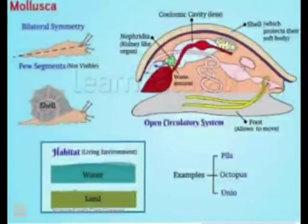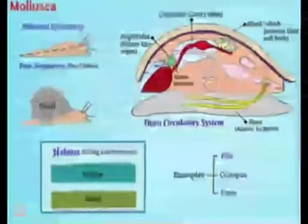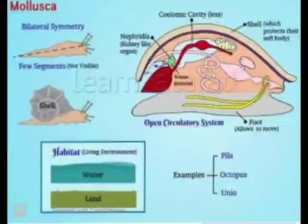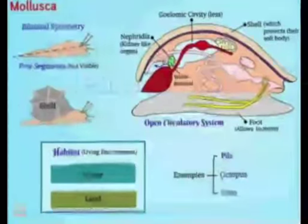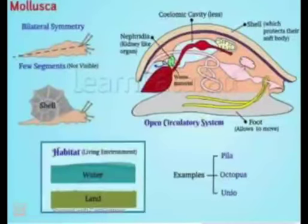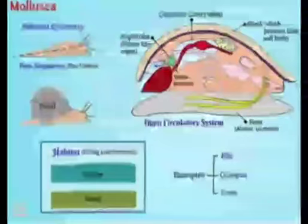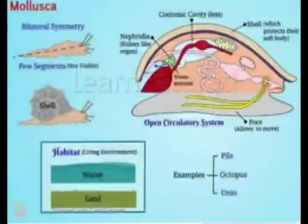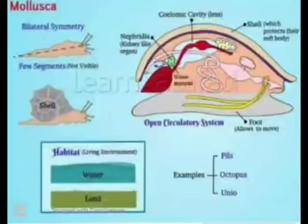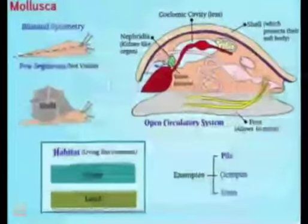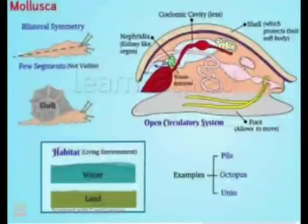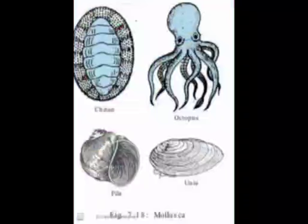The next phylum is phylum Mollusca. It includes shelled animals which are bilaterally symmetrical with a little segmentation in their body. The coelomic cavity is reduced. They have an open circulatory system like arthropods. They have a foot-like organ used for locomotion and a kidney-like organ for excretion. These animals are also found in water, especially marine water.